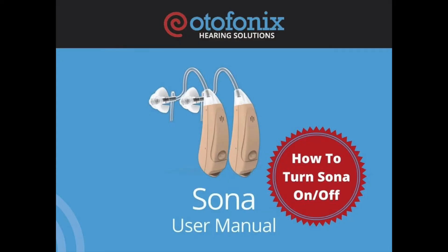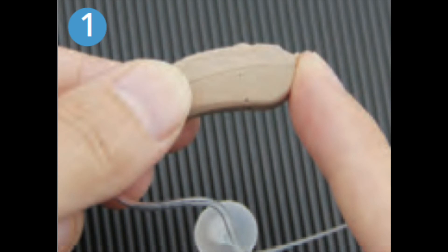How to Power Your Hearing Aid On or Off. Step 1: To power on, gently insert the battery and close the door.